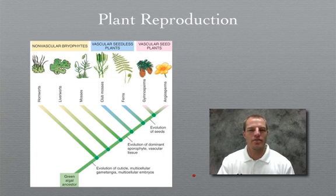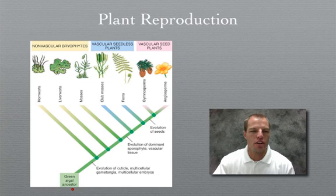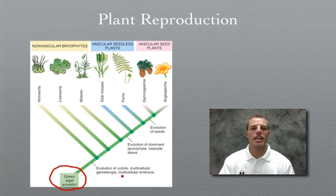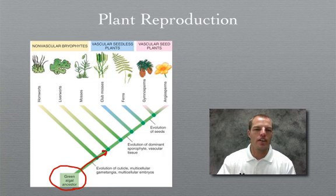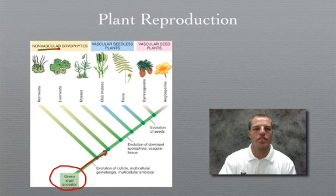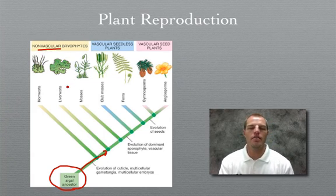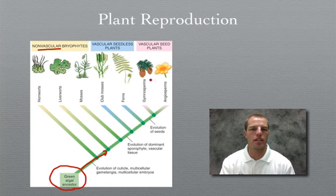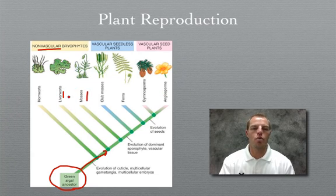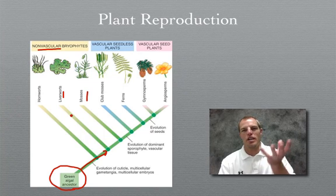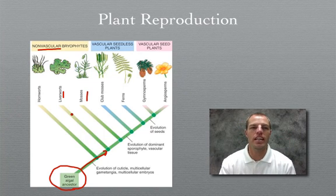Over here on the left is a phylogenetic tree of plants. At the very bottom, you'll notice scientists consider green algae to be the ancestor to plants. As plants evolved, this first group here consists of very simple organisms — non-vascular plants — meaning they don't have tissues to transport nutrients like gymnosperms and angiosperms. Things like mosses and liverworts stay very low to the ground because they can't transport nutrients any farther to get any larger.